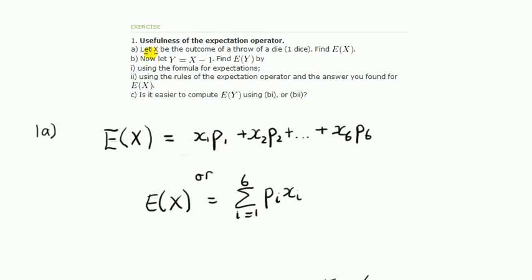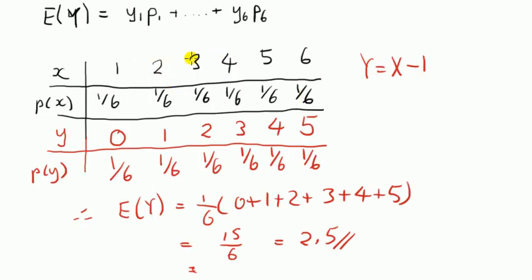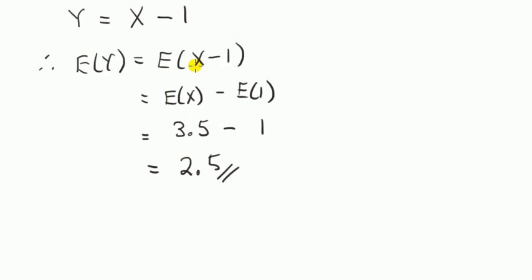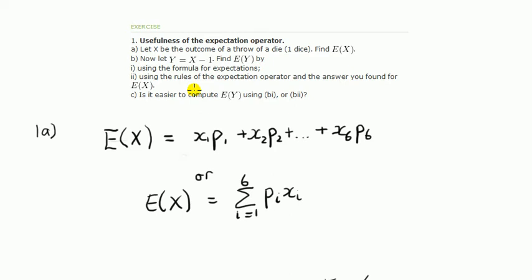So for part B, we have looked at two separate procedures to solve the same problem. Part C. Is it easier to compute this expectation of y using the first method or the second method? So you don't have to be Einstein to see that the second method using the rules of the expectation is much simpler.